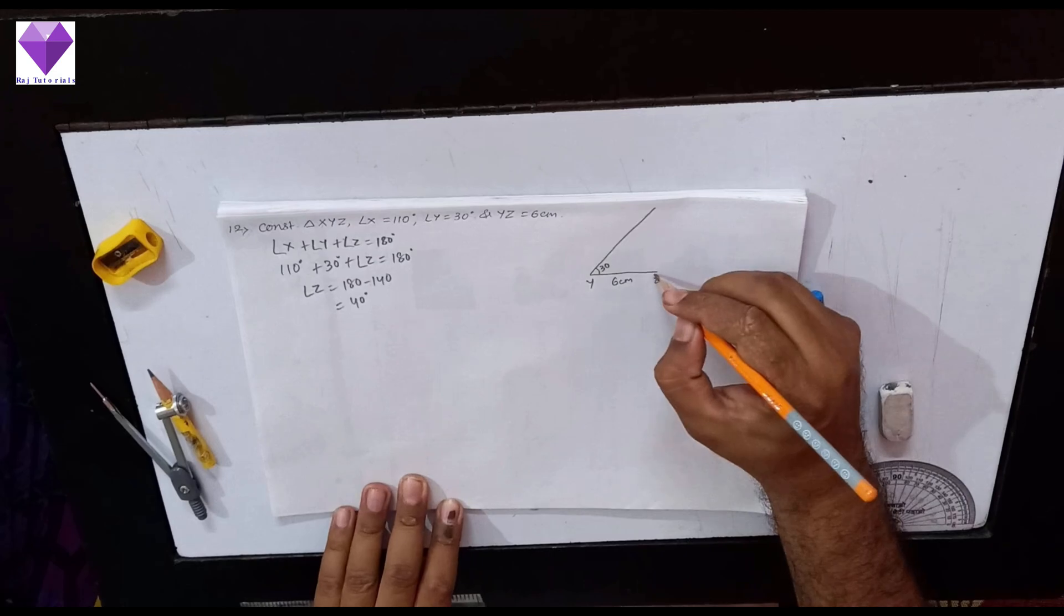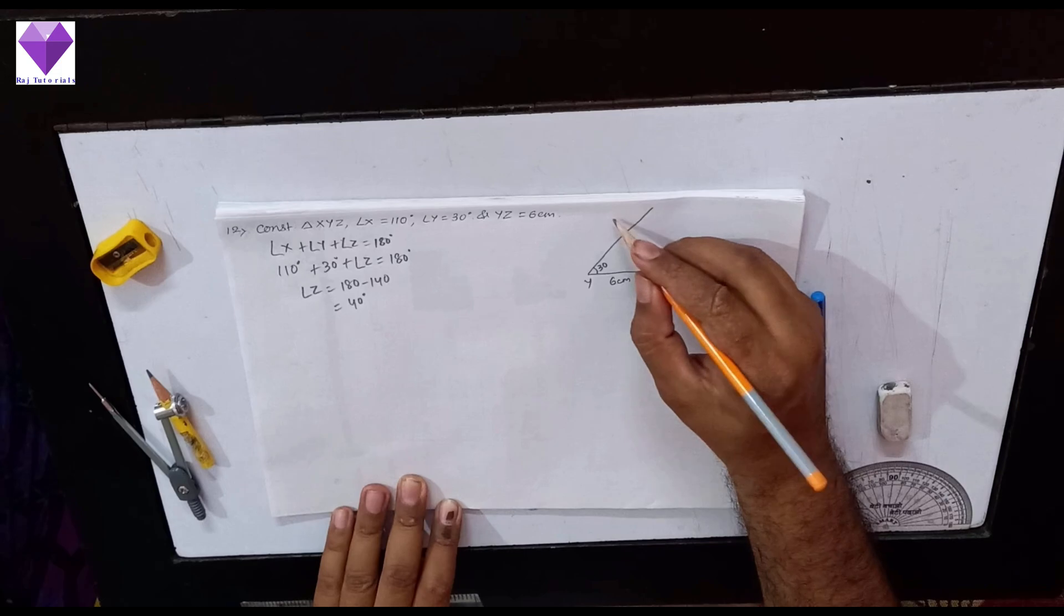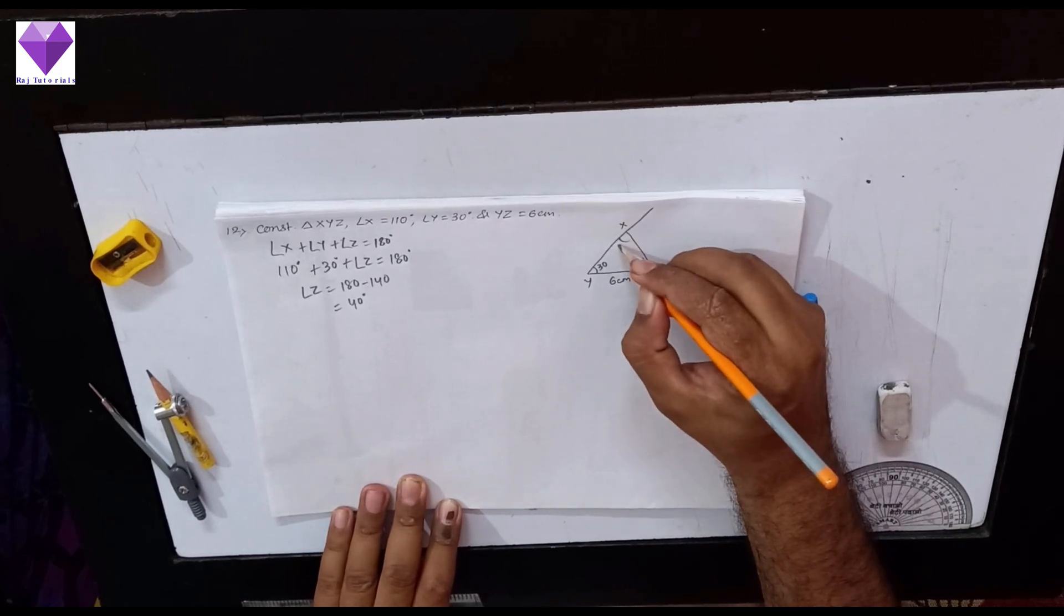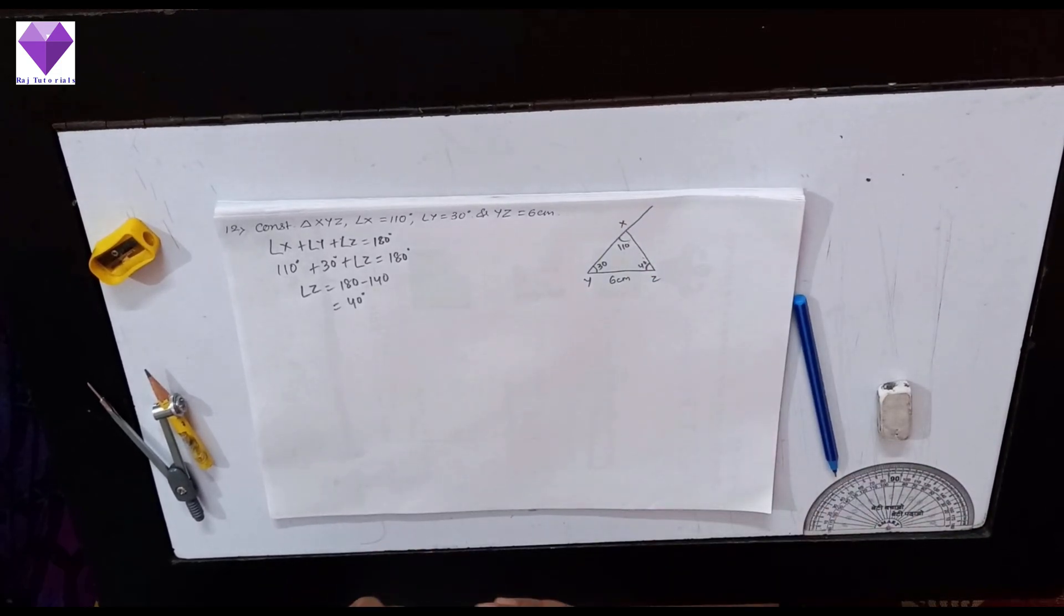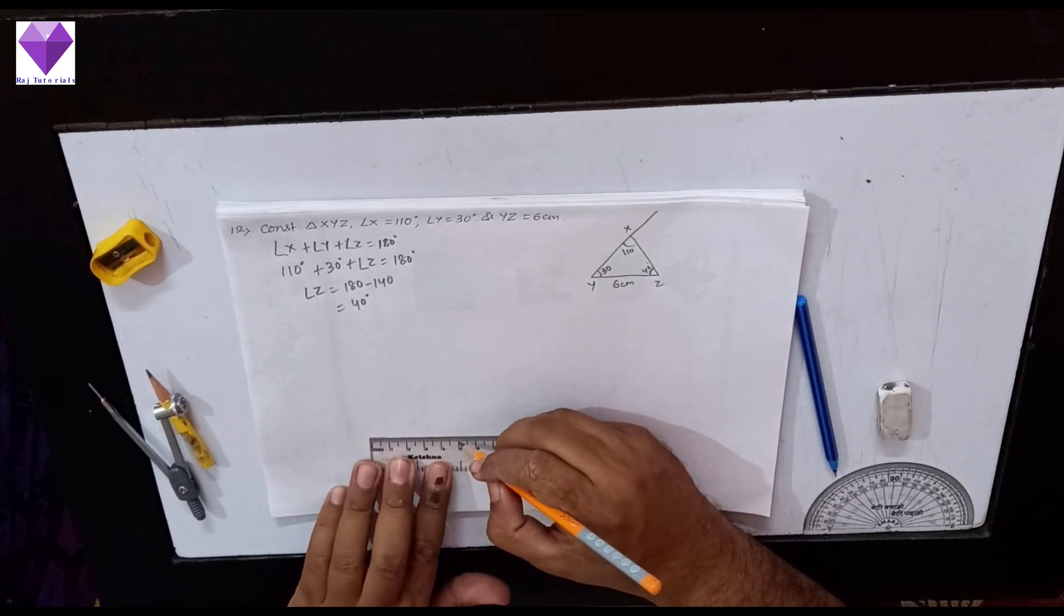So angle Z I will make 40 degrees, so automatically angle X I will get 110 degrees. So now to draw that, first of all I will make a base YZ of 5 cm.